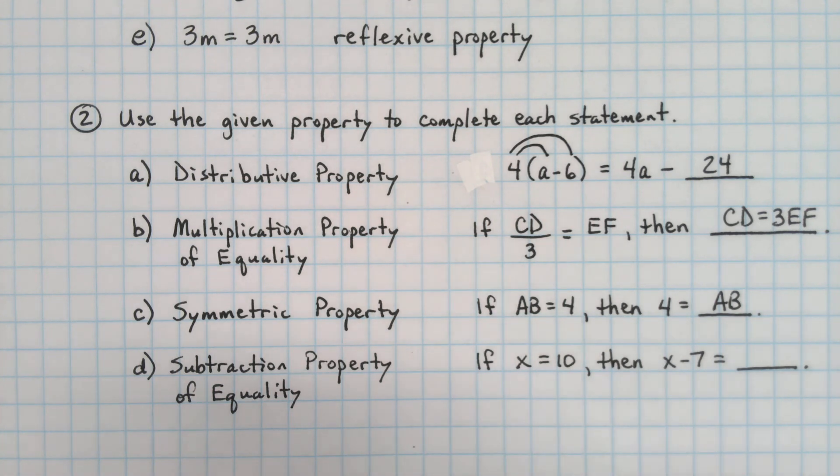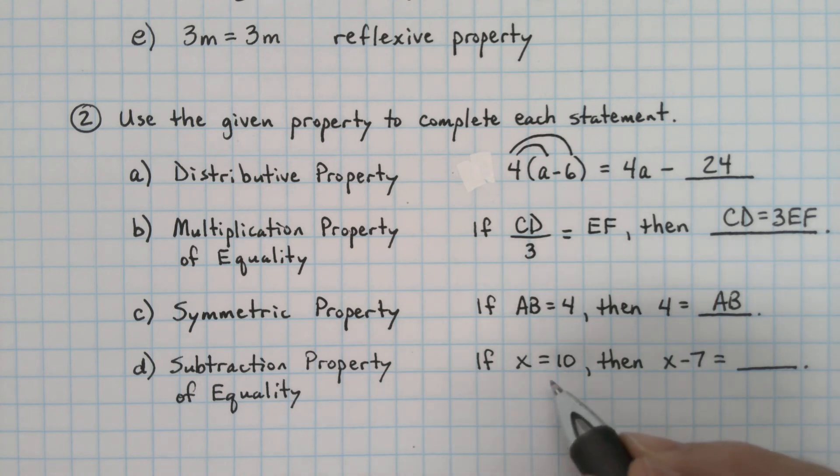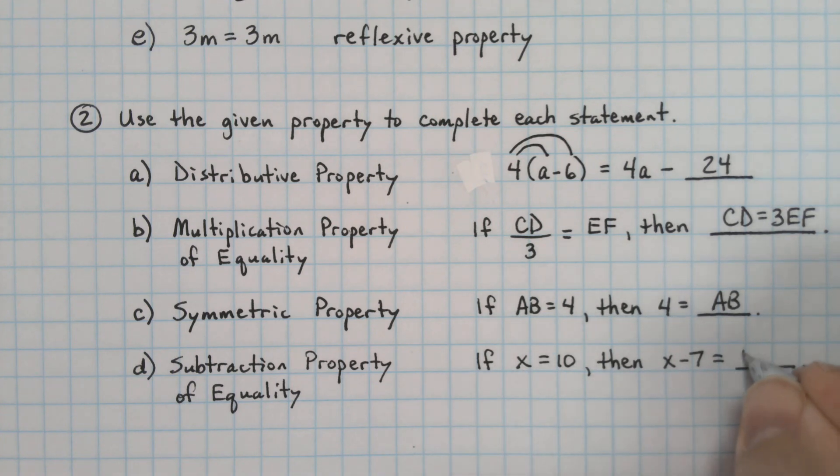And part D is the subtraction property. It says that if you subtract the same thing from both sides, and if they were equal to begin with, they will remain equal. We seem to have subtracted the 7 from the x, so we would subtract the 7 from the 10.